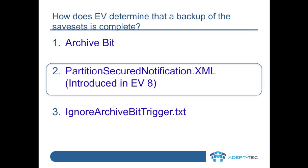In these situations, the administrator has the option of using either ignore-archive-bit-trigger.txt, or the partition-secured-notification.xml available from Enterprise Vault 8 and upwards. These have to be set up and configured by the administrator.